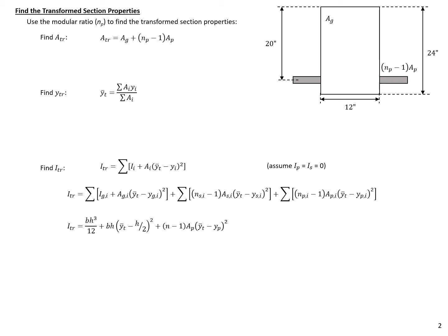Computing our transformed area: we have 12 inches times 24 inches for the gross area, plus (7.1 minus 1) times the prestressing area of 0.459 square inches, giving us a transformed area of 290.8 square inches.